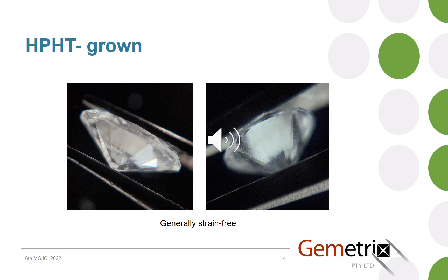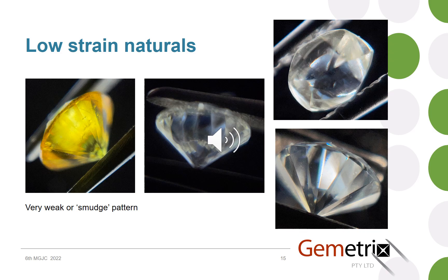On the whole, HPHT-grown diamonds are relatively easy to see through cross-polars because they have no strain or very little, so there are no coloured patterns. However, sadly, there are instances of natural diamonds also having very weak birefringence and could be mistaken for an HPHT-grown one, though keen eyes would see a smudge pattern showing a very low amount in some instances. So that's just a cautionary tale for some rare cases.